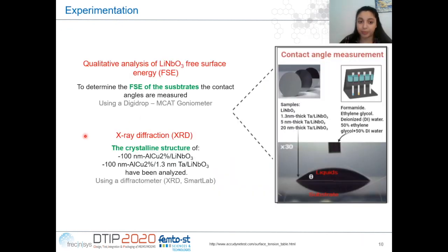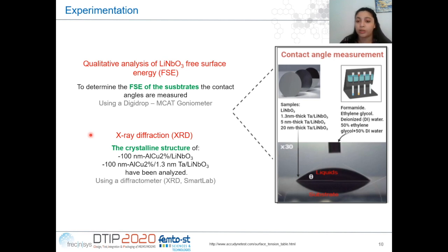The aim of this work is to improve the free surface energy of the lithium niobate by using a tantalum underlayer, and thereby obtain aluminium-copper films grown by the layer-by-layer mode with higher texture. To determine the impact of the tantalum underlayer on the lithium niobate surface, we will perform quantitative analysis of the free surface energy of lithium niobate with 1, 3, 5, and 20 nanometers of tantalum underlayer. Additionally, XRD studies will be made on aluminium-copper films deposited directly on lithium niobate and with 1.3 nm of tantalum underlayer, to evaluate the crystalline structure.